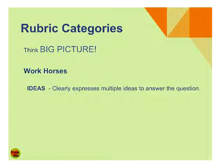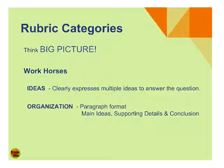So what are my work categories for rubric categories? The first one is ideas — clearly express multiple ideas to answer the question. I want a student to be able to demonstrate that they understand all the different concepts and how those concepts work together or don't work together. So if they can do that, it communicates to me that they really have a strong understanding of this content. Ideas is really an important one for me.